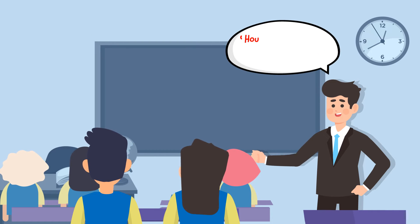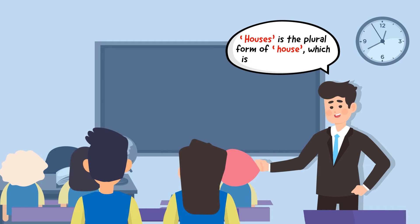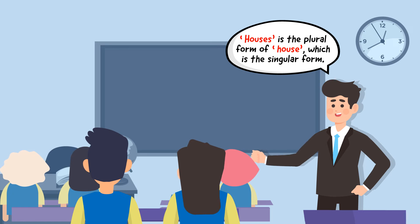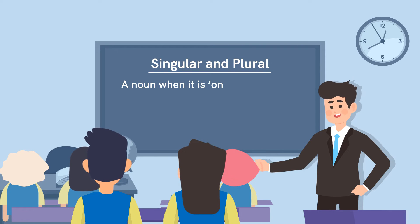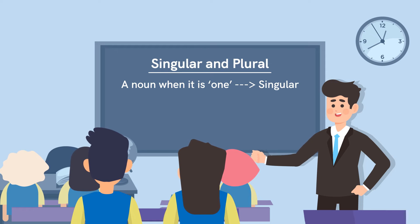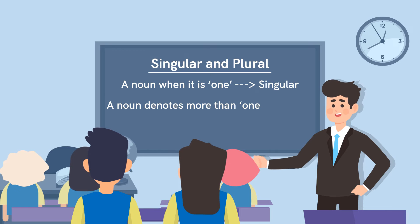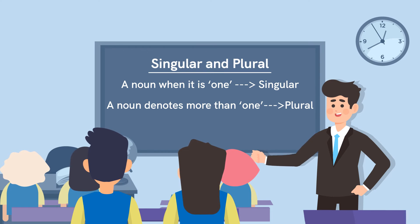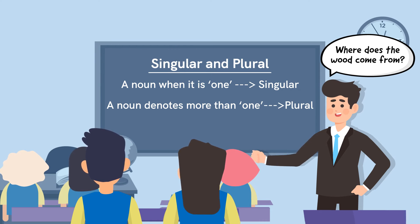Explain to the students that 'houses' is the plural form of 'house,' which is the singular form. A noun when it is one is said to be in singular form. If the noun denotes more than one, it is said to be in plural form. To illustrate the concept further, ask the students where wood comes from. They will respond 'from the jungle' or 'from trees.'